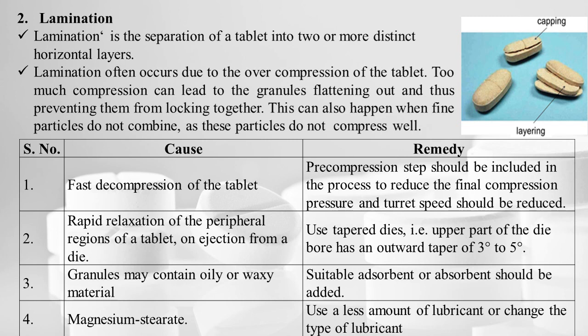Rapid relaxation of the peripheral regions of the tablet on ejection from the die may also result in lamination — the tablet faces stress from stress relaxation as well as ejection stress from the lower punch. This can be overcome by using a tapered die, where the upper part of the die bore has an outward taper of 3 to 5 degrees.